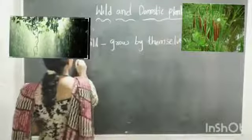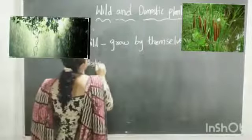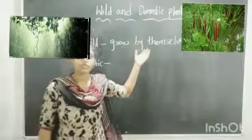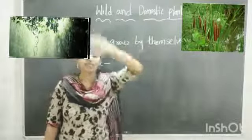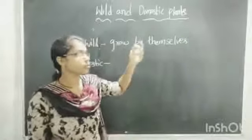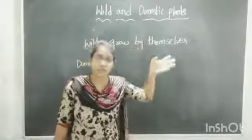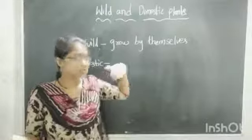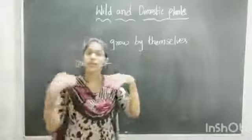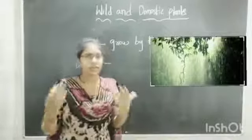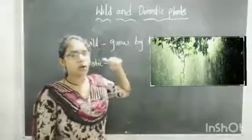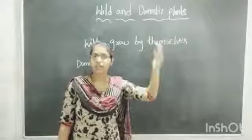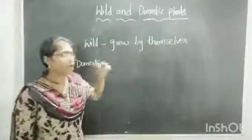What are domestic plants? Wild plants can be seen outside your house, in the jungle, forest, and on the road. They grow on their own with the help of rainwater or any water available. We are not giving any fertilizers or manure to grow these plants.